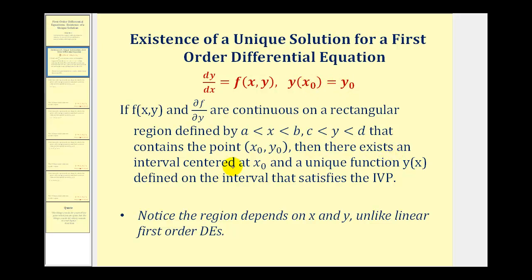then there exists an interval centered at x₀ and a unique function y(x), defined on the interval that satisfies the initial value problem. So our main goal here is to find the region where f and the partial derivative are both continuous.